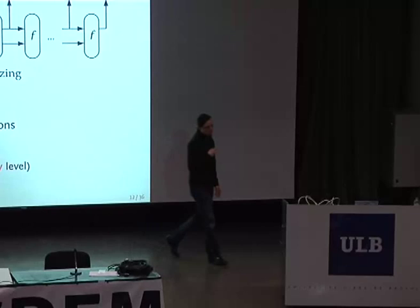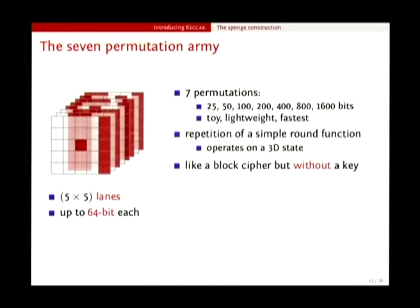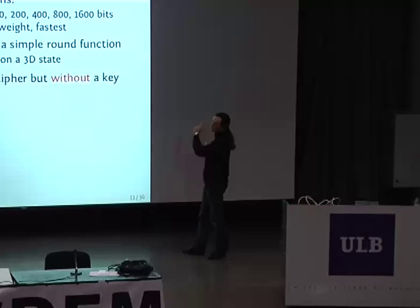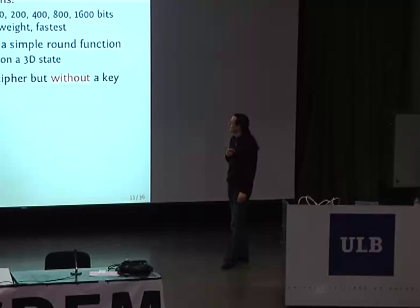The f inside is a permutation we call Keccak-f. In Keccak we have seven permutations with different widths, starting from a small toy variant which is only 25-bit wide, up to 1,600-bit wide. The smaller ones are for toy purposes to play with and analyze, while the biggest one is really to get the most speed from the sponge function. You can use the middle ones for lightweight applications, for instance for embedded systems.